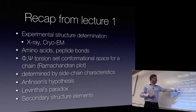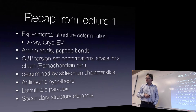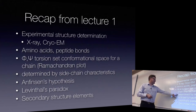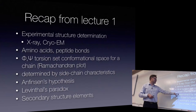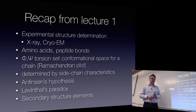We spoke a bit about the phi-psi torsions — that's going to come back today. A very large part of our world is actually going to be phi-psi torsions because those are by far the most important degrees of freedom in proteins. The sidechain characteristics of the amino acids determine the properties of proteins — that's also something we're going to come back to. And then we spoke a little bit about Anfinsen and Leventhal and secondary structure elements.